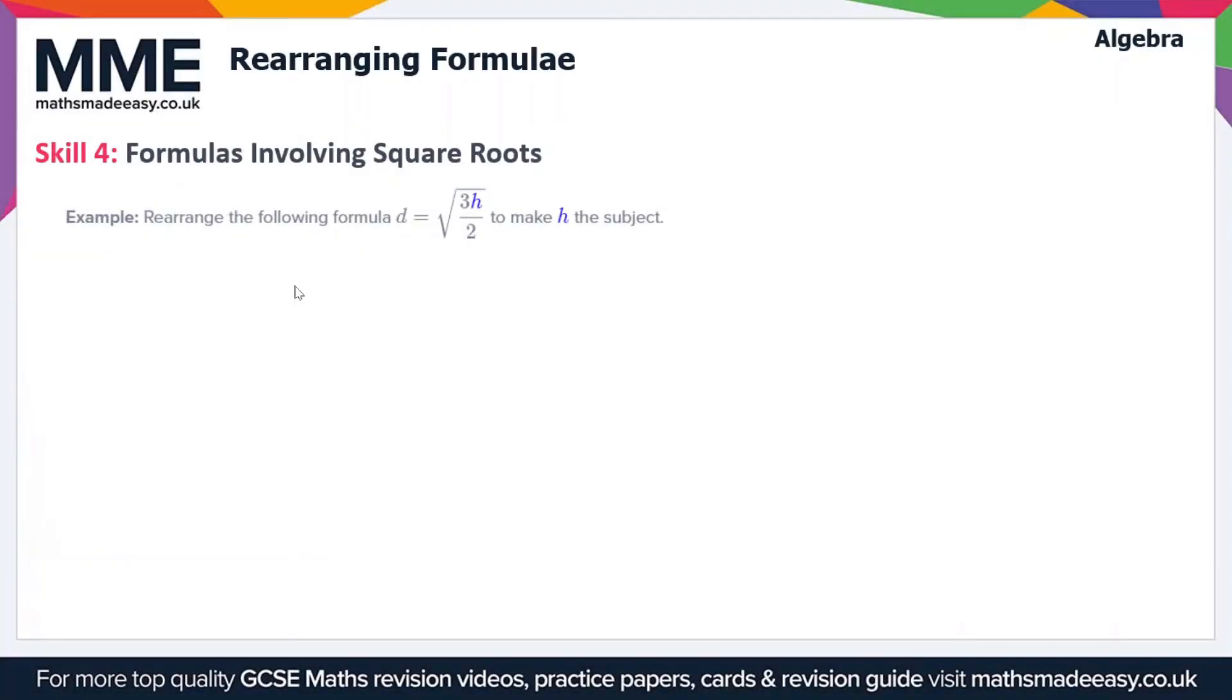So let's move on to some similar examples but this time involving square roots rather than squares. We have to rearrange the following formula which is d equals the square root of 3h over 2 and make h the subject. So we'll just start by rewriting it: d equals the square root of 3h over 2.